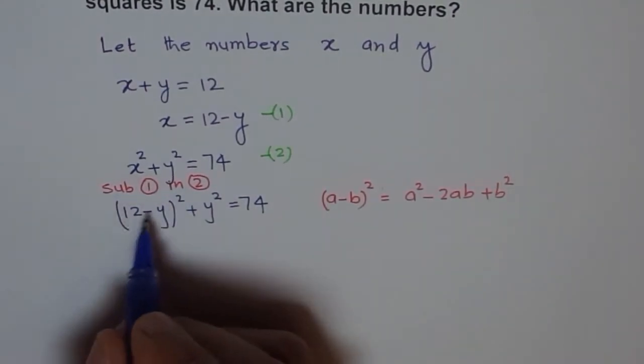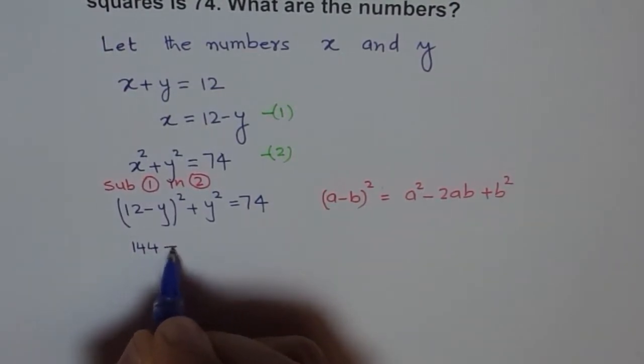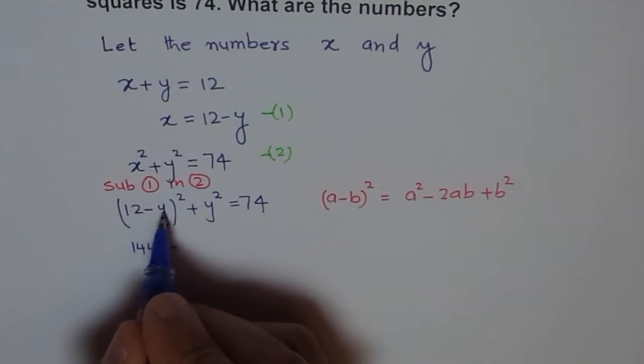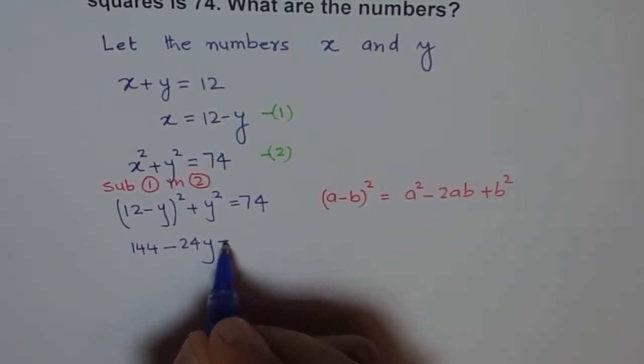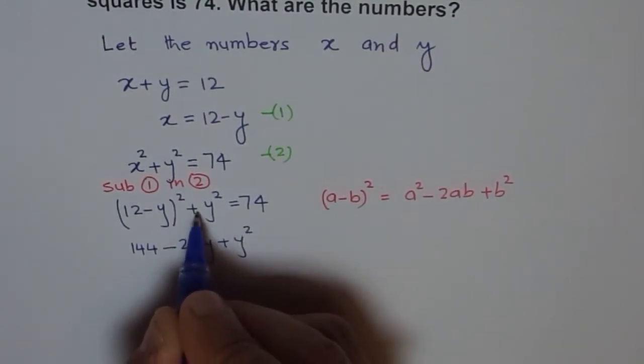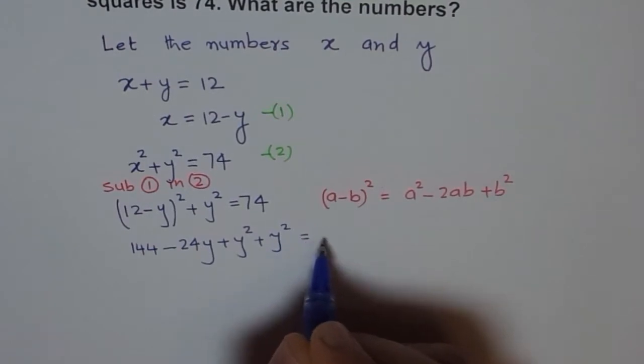So, 12 square is 144. So, we have 144 minus 2 times 12 is 24y. So, we have 24y plus y square plus y square and then we have this y square plus y square equals to 74.